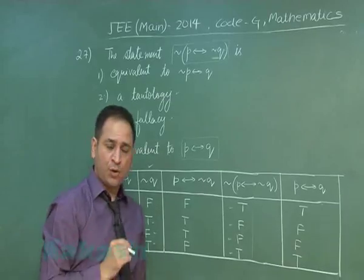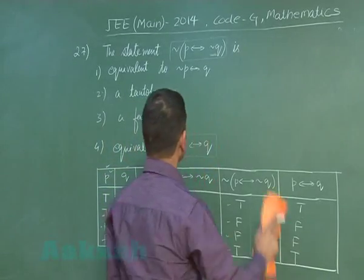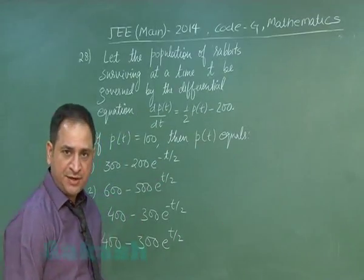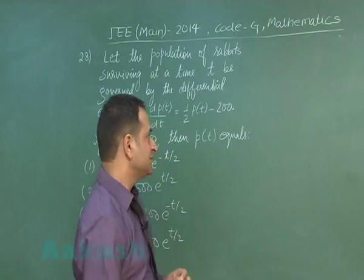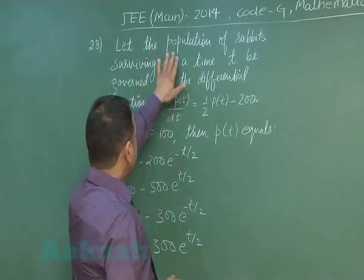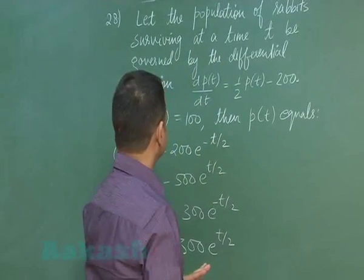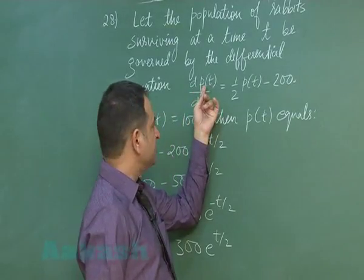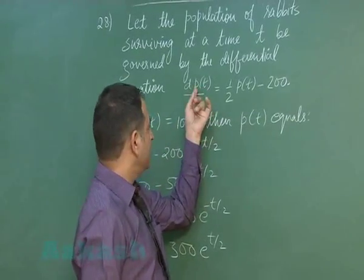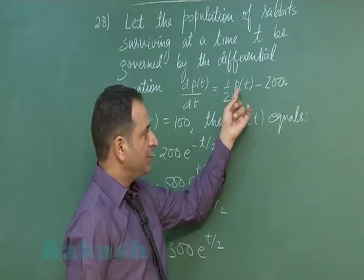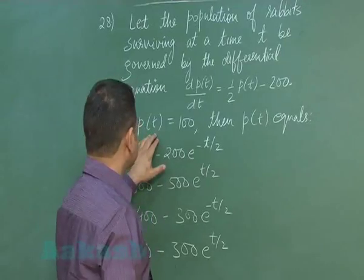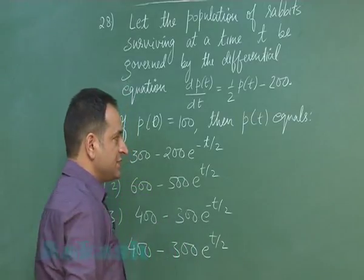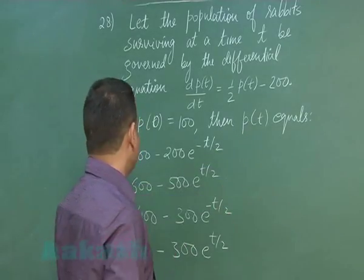Moving to problem number 28, related to the differential equation. It is given that the population of rabbits surviving at time t is governed by: dP(t)/dt = (1/2)P(t) - 200. At time t = 0, the population is equal to 100. We have to find P(t).